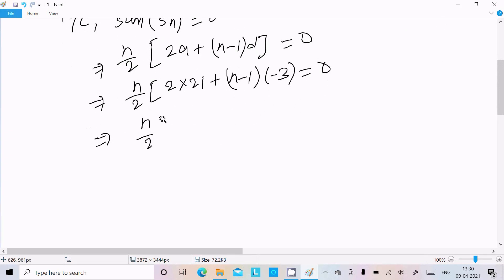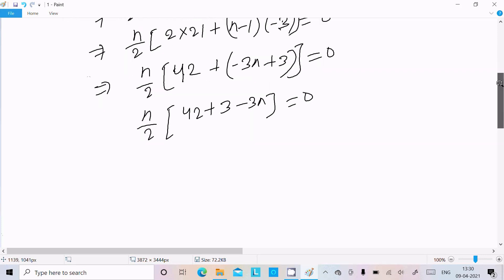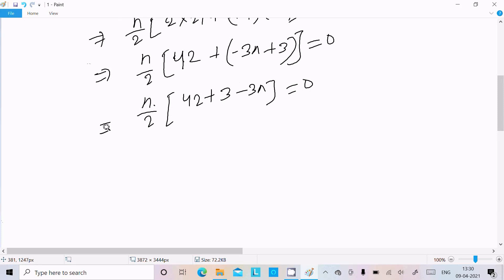So here this is n by 2, 21 into 2 that is 42, plus now here minus 3 into n, minus 3n, minus into minus plus 3 into 1, 3 equal to 0. You need to open this bracket. Now n by 2, this is 42, this is 3 and minus 3n equal to 0. So this term is on multiplication, 42 plus 3 that is 45 minus 3n equal to 0.